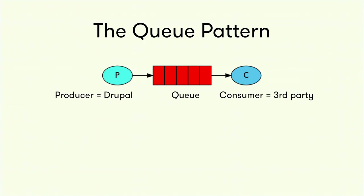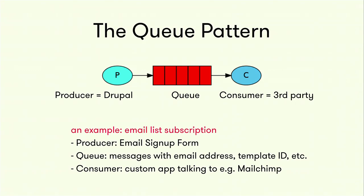The other pattern is much less talked about, at least for Drupal — we call it the queue pattern. Queues are a vital component in the land of microservices. A queue system is very simple: you have a producer that produces some data and adds it to a queue; these messages are queued until a consumer, at the right time, fetches the data and processes it. In Drupal, an example is an email list subscription. We have a producer — our email signup form — and every time somebody submits an email, a message gets added to the queue including the email address, a template ID, and maybe some more data. A consumer will eventually pick up the data and do something with it — maybe a custom Node.js app or a Symfony console command — which then talks to MailChimp, for example.